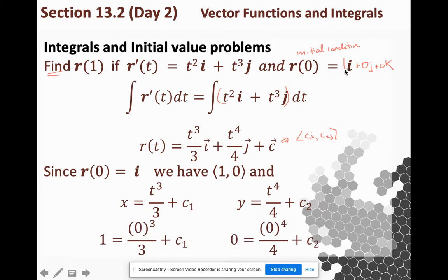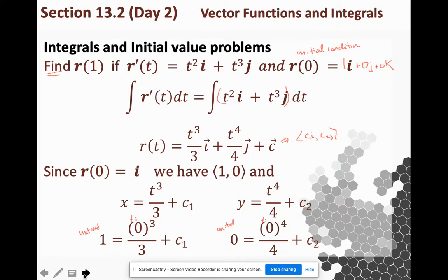Right? Plug in the initial condition. t equals 0 is what I was given, and solve for c1. 0 is the initial condition in the j or the y direction, and plug in the t I'm after, and solve for c2. So c1 is 1, and c2 is 0.